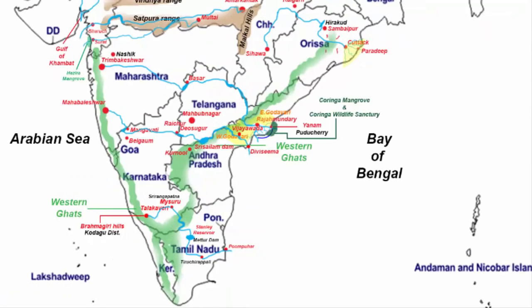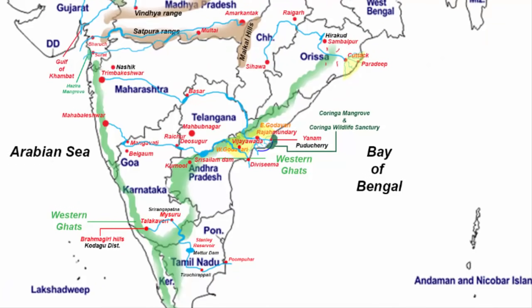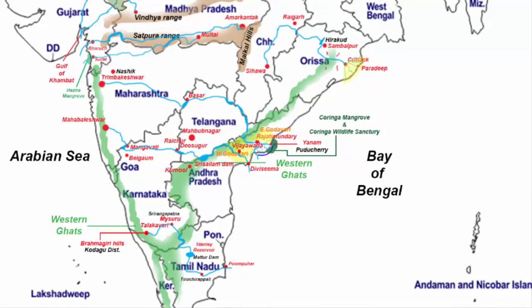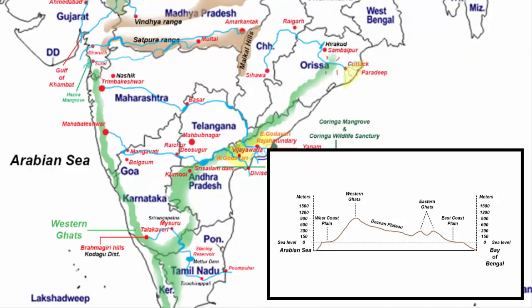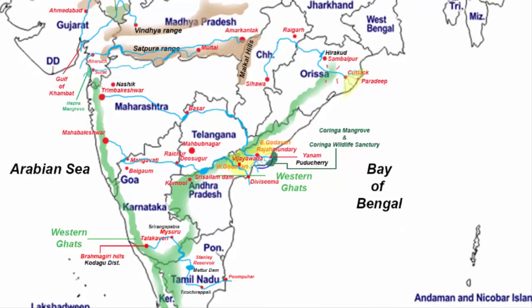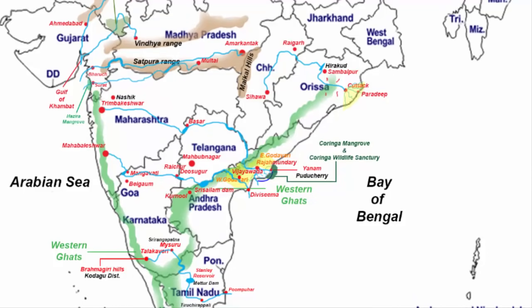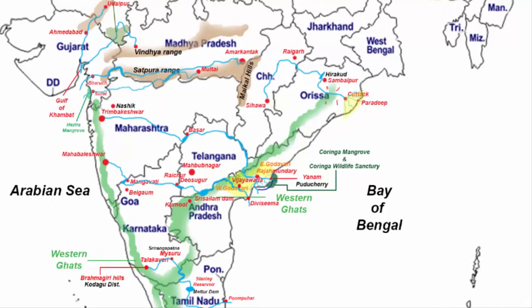So these were the main rivers of peninsular India. They together form the peninsula river system. The peninsula drainage system is older than the Himalayan one, evident from the broad, largely graded shallow valleys of the majority of the rivers. The peninsula rivers receive water only from rainfall, and water flows in these rivers in the rainy season. However, a few rivers flow throughout the year. Therefore, these rivers are both perennial as well as seasonal. I hope this video was informative. Let me know your thoughts in the comment section. Thanks for watching.